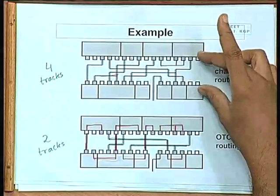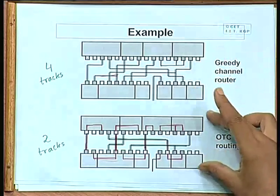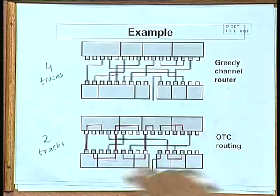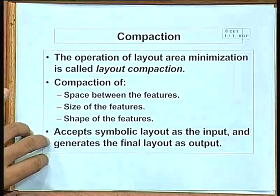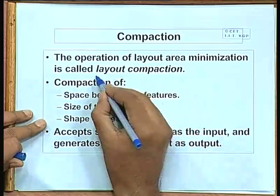OTC over-the-cell routing is a type of layout compaction — after obtaining a channel routing solution, you use it to reduce the number of tracks required, which is a kind of compaction. But in general, after completing any kind of layout design, you can go for layout compaction. Layout compaction is a general step using which you can obtain significant reduction in layout area — it can be as high as 20 to 30 percent. So when we say compaction, we are talking about layout area minimization.